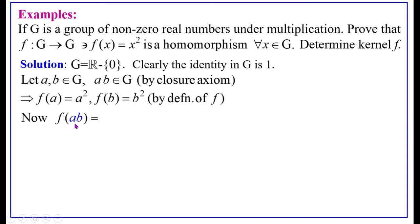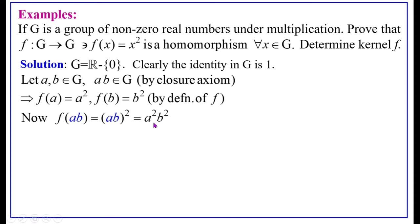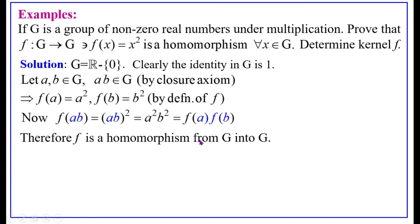Now consider F(A·B). To prove F is a homomorphism, we must show F(A·B) equals F(A)·F(B). Since A·B is a single element of G, by definition of F, F(A·B) equals (A·B)² equals (AB)². By the law of indices, this equals A²·B². Now A² equals F(A) and B² equals F(B), therefore F(A·B) equals F(A)·F(B). Therefore F is a homomorphism from G into G, where G is the group of non-zero real numbers under multiplication.